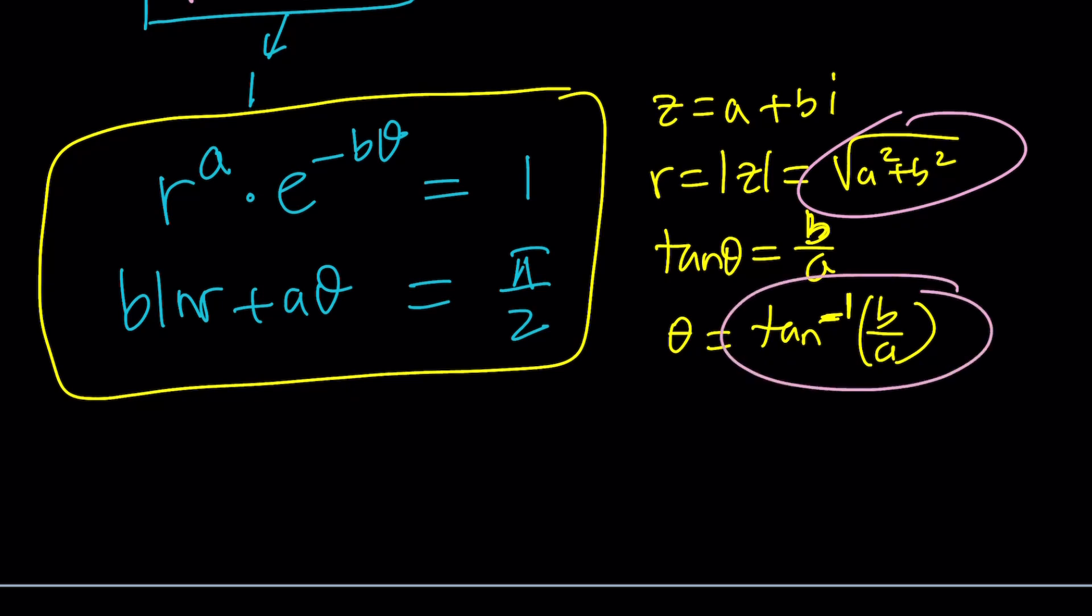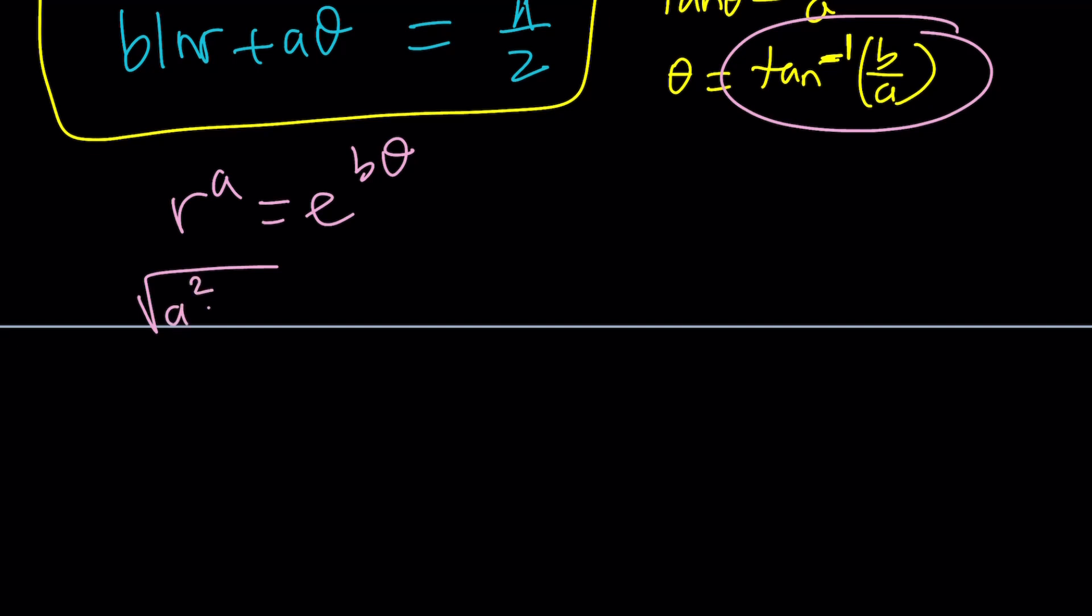So I can go ahead and throw this on the right hand side and write this as R to the A equals E to the B theta. And from here R is going to be the square root of A squared plus B squared raised to the power A equals E to the power B times tan inverse B over A. Again depending on the quadrant you're going to have to add some angles if that's the case but in this case we're assuming first quadrant. Okay? So this gave us one equation. Doesn't look very good but anyways.